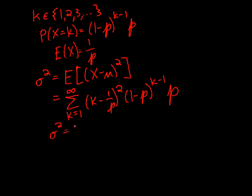So the variance is 1 minus p over p squared. And then the standard deviation would just be the square root of that.